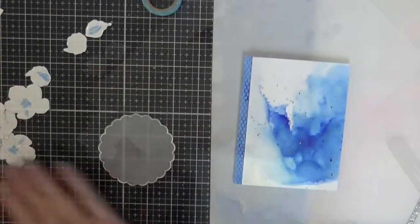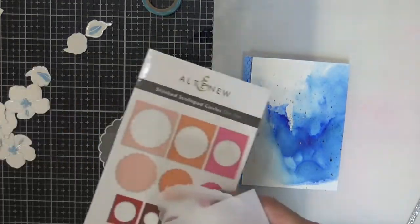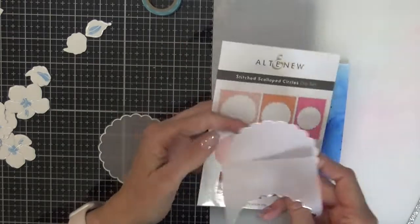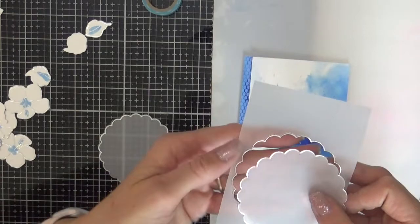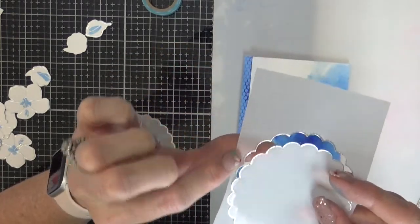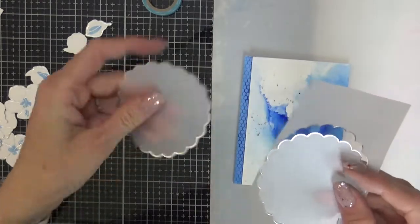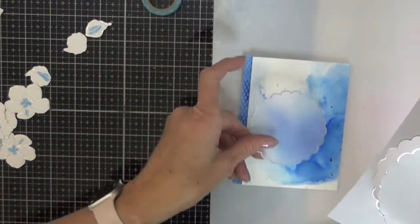Now there's a stitched scalloped circle die that coordinates with that hot foil scalloped circles, but I wanted to show you it cuts and leaves some of the foil on both of those pieces. But I wanted all of the foil on the piece that I used, so that's why I used scissors to cut mine out.